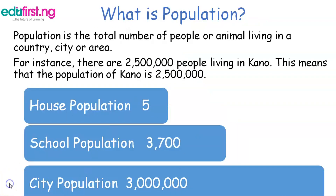Now, how many people are living in your house? You, your father, your mother, and two other siblings — that makes five. This means the population of your house, or your family, is five.